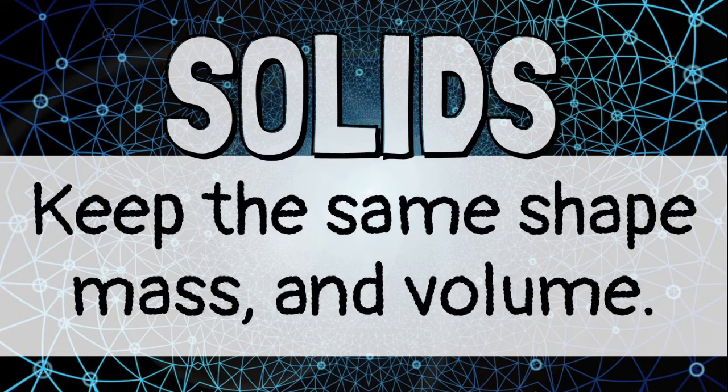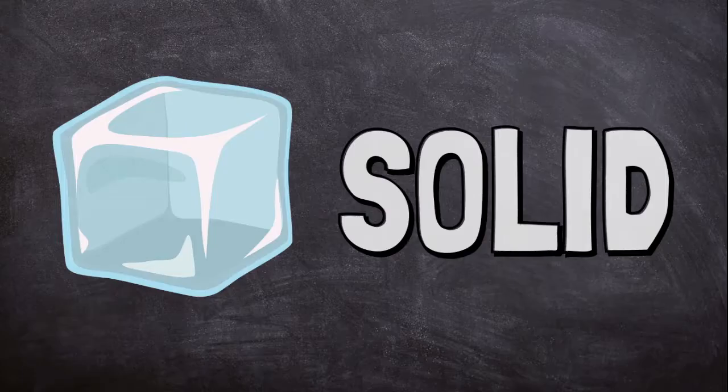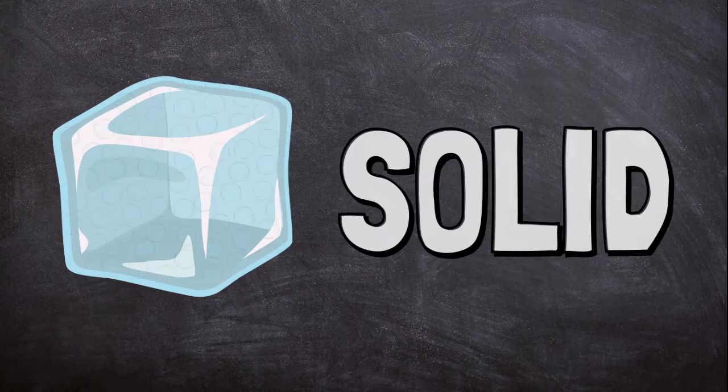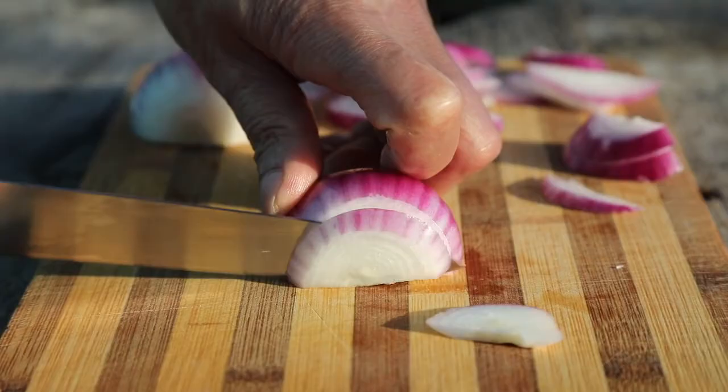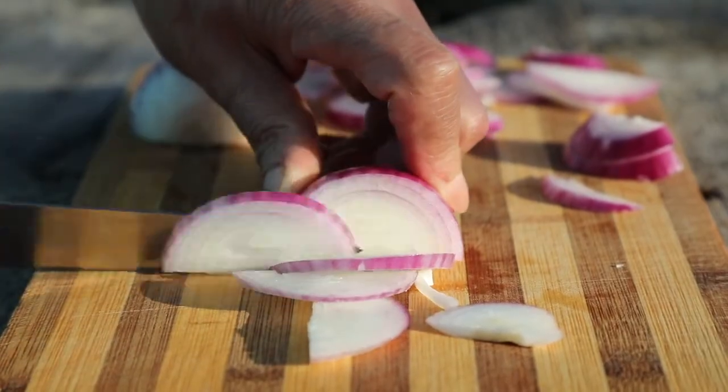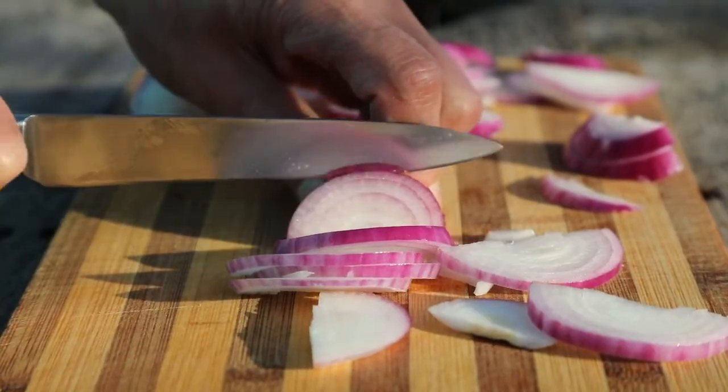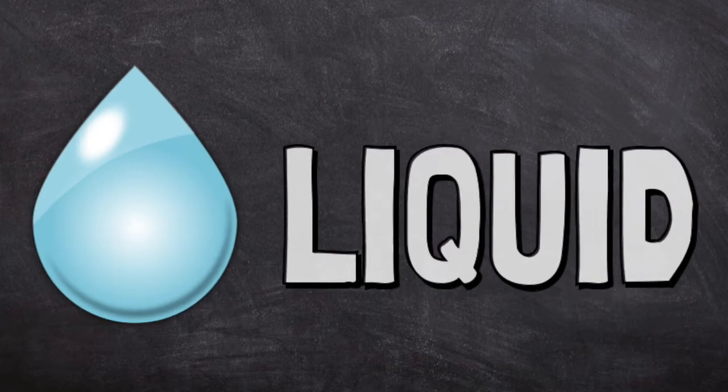The atoms in a solid object are pressed tightly together and do not move around. A solid can only change shape if it's broken or cut. Liquids are another state of matter.